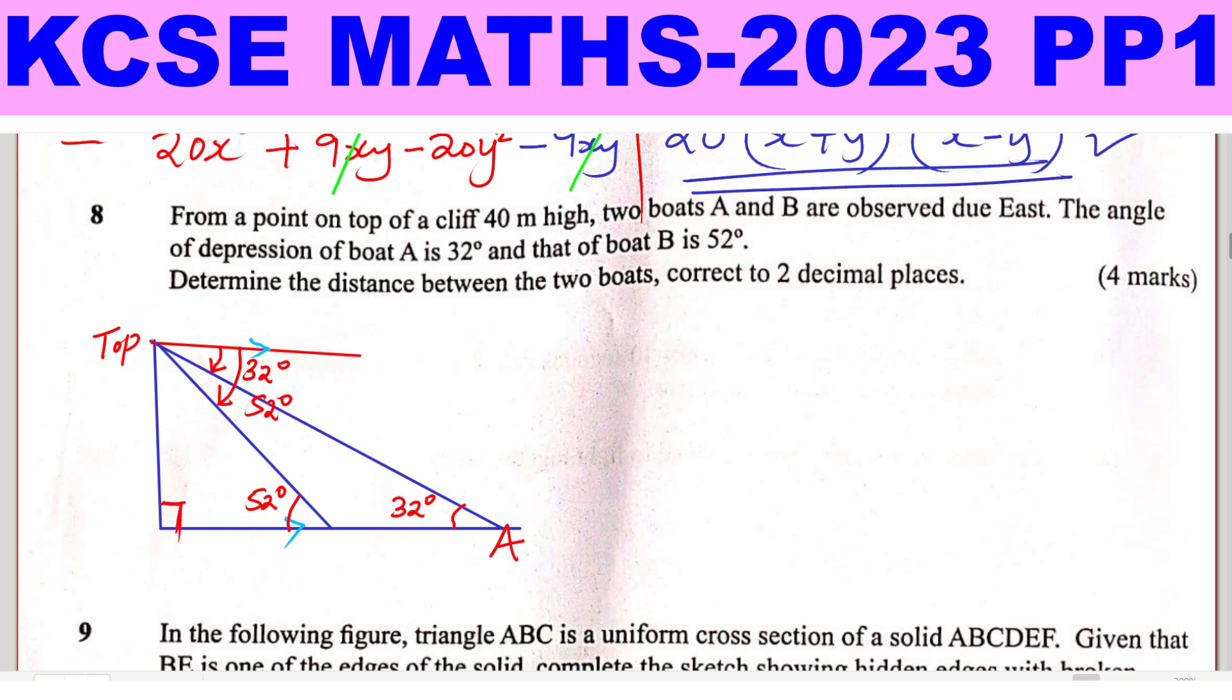So the height of the cliff is 40, that is 40 meters. Now you are required to find the distance. This is B. So from the top of the cliff to B, the angle of depression is 52 degrees. Having that right angle triangle here, you are supposed to determine the distance between the two boats, correct to two decimal places. So this is the distance that is required.